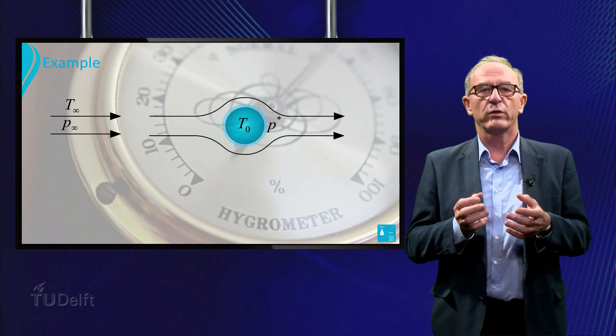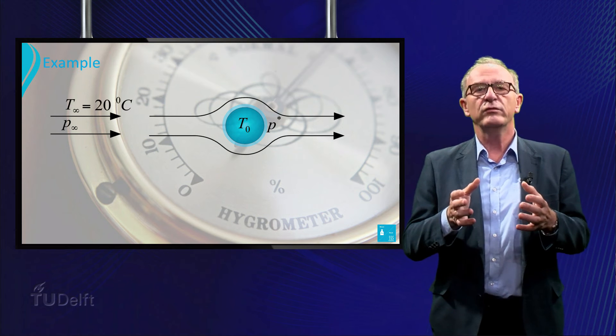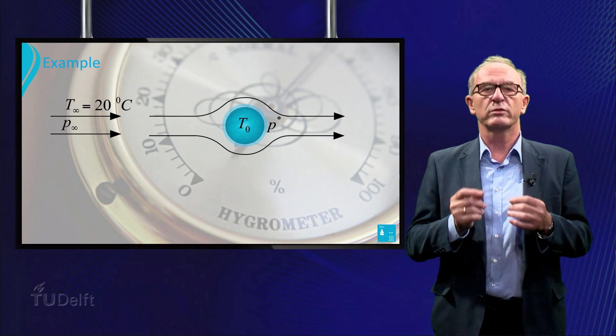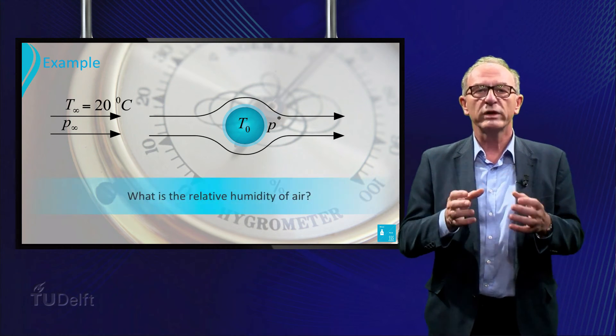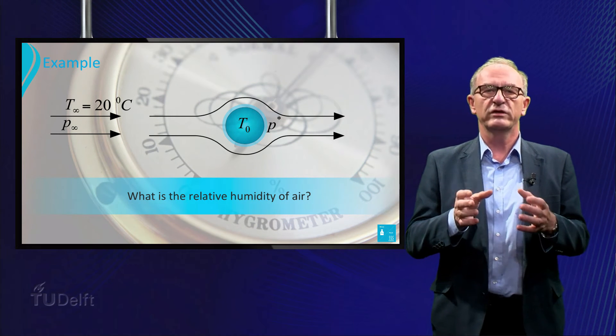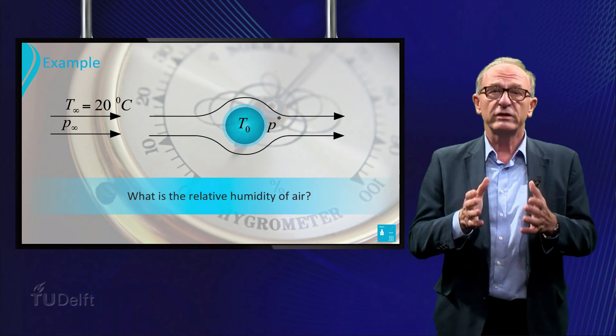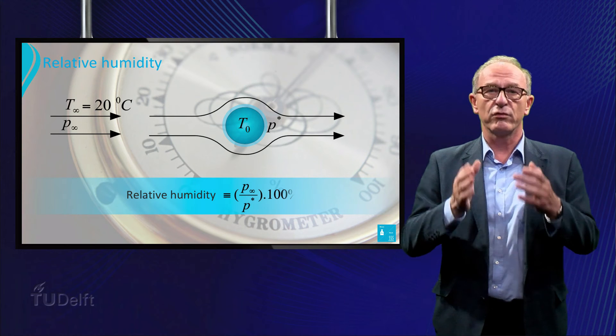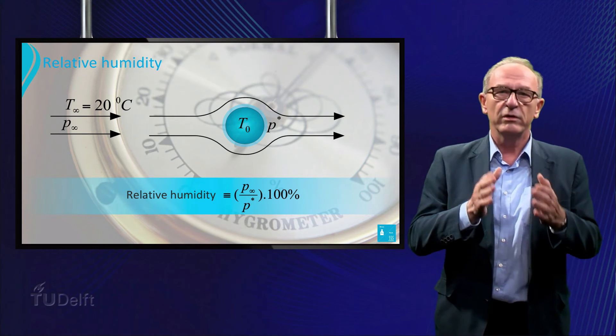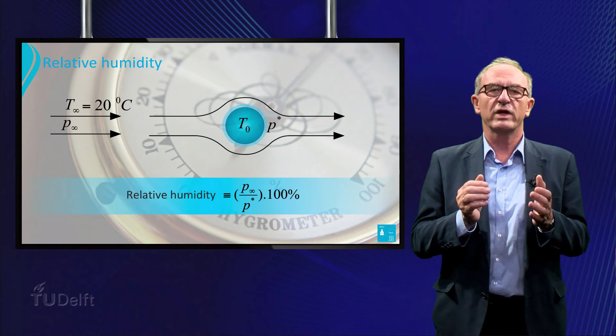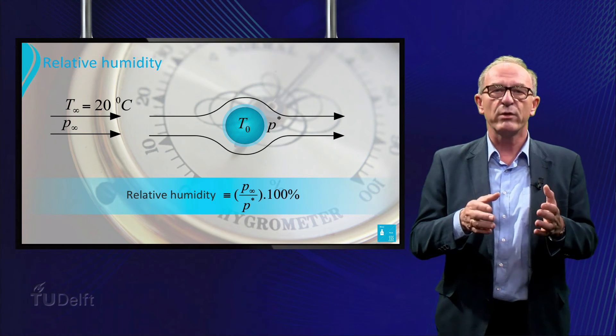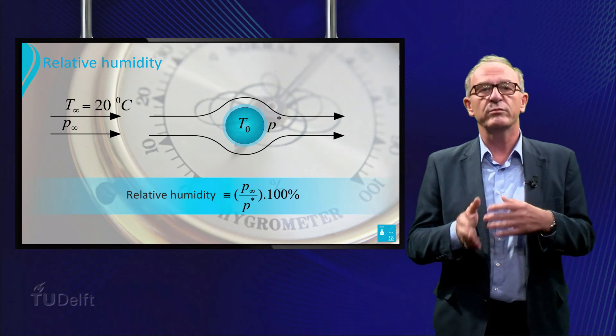Let's look at the following example. We have an airflow of 20°C which contains a certain amount of water. What is the relative humidity of the air in this situation? The relative humidity is defined as the ratio of the pressure of the vapor in a gas mixture divided by the saturation pressure of the vapor at the same temperature - in our case, P_∞ divided by P*.